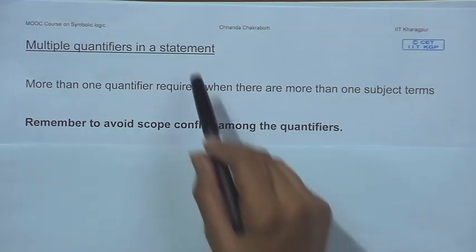Remember, every quantifier has a scope and that is specified. What you need to avoid at all cost when you are using more than one quantifier is the conflict of scope between or among these quantifiers, because otherwise you are going to have a terrible problem interpreting the variable that you are using. The sentence will not make any sense, or the sentence might make more than one sense — neither is desirable in logic. So to avoid scope conflict is our primary concern when you have multiple quantifiers in a statement.